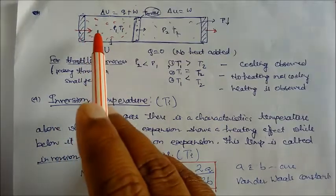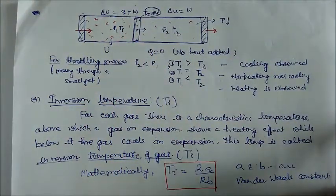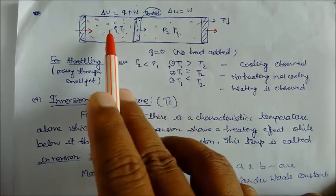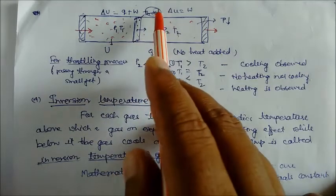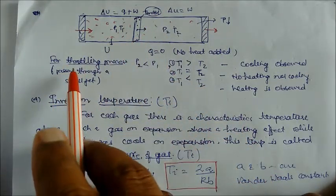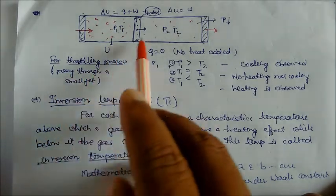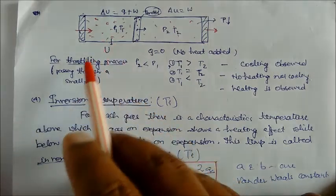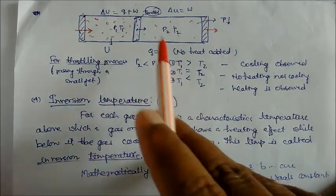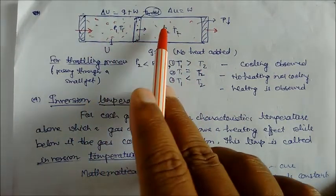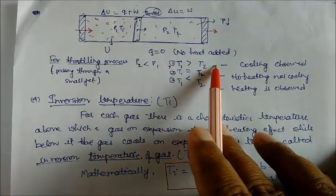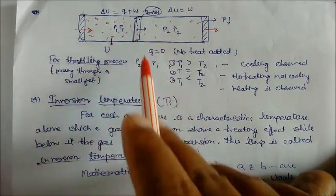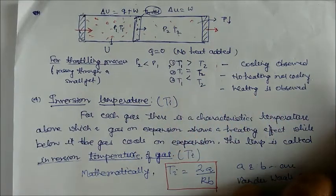In the throttling process, gas at higher pressure P1 and temperature T1 passes through a throttle — a jet — to a region of lower pressure P2 and lower temperature T2, with no heat transferred to the system. Three conditions can be observed: if T1 is greater than T2, a cooling effect is observed; if T1 is equal to T2, neither heating nor cooling occurs; and if T1 is less than T2, a heating effect is observed.